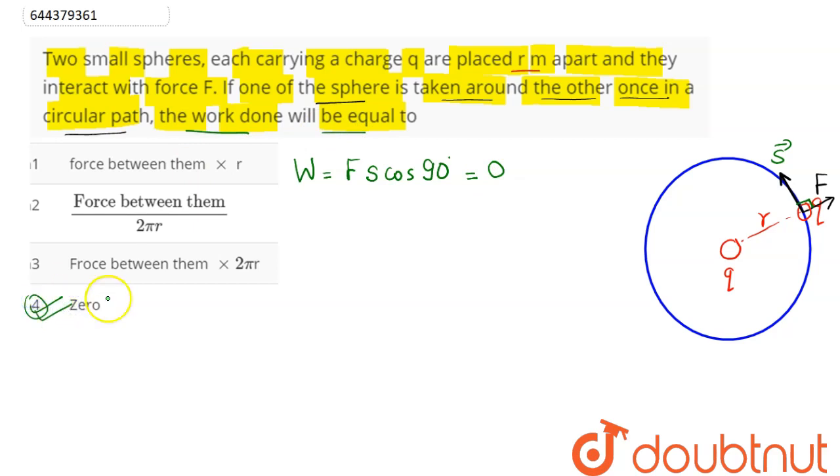So option number 4 is the direct answer. In other terms, if this particle is taken once in a complete circle,